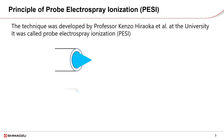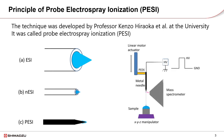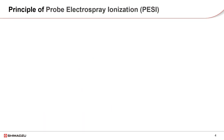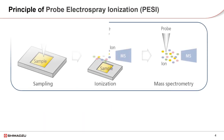This new ionization technique was developed by Professor Kenzo Hirooka at the University of Yamanashi in Japan. The technique is called Probe Electrospray Ionization, or PESI. The probe is a sharp metal needle moving up and down during analysis. It touches the sample and brings sample material up, and a high voltage is applied that causes electrospray ionization to occur.